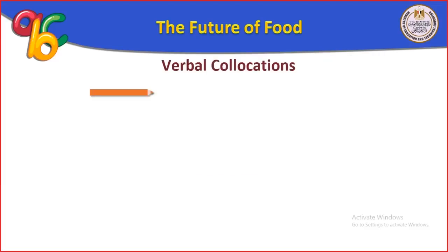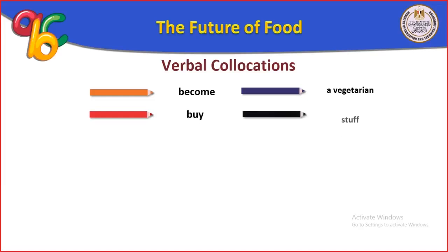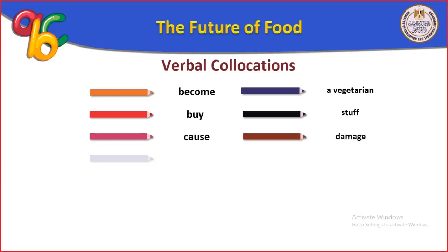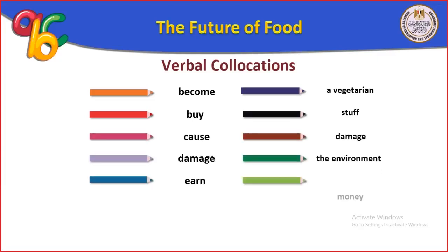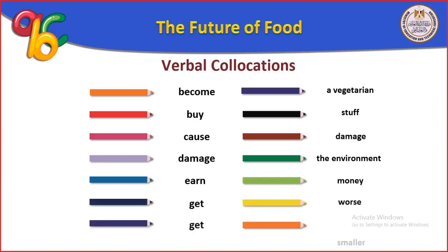Now we have some verbal collocations — الفعل بيمشي مع تعبير معين. Become a vegetarian — vegetarian is a person who eats only vegetables. Cause damage, damage the environment (دمار البيئة). Earn money (يكسب فلوس). Get worse (يتحول للأسوأ). Get smaller (يصغر). Get even hotter (يكون أكثر حرارة).